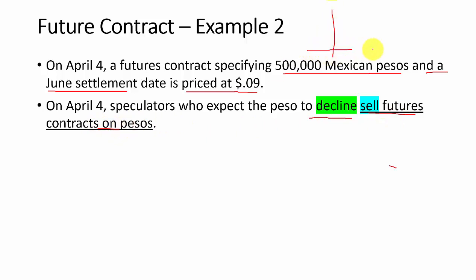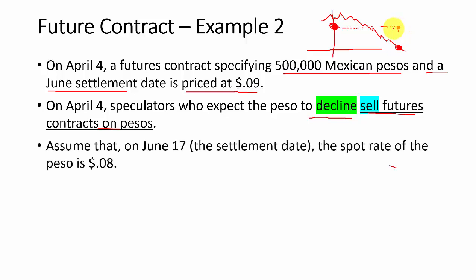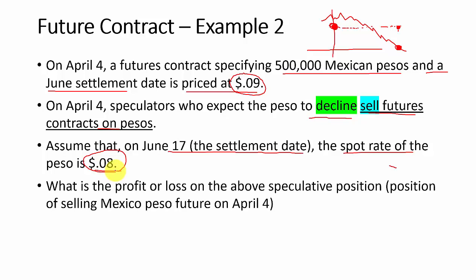On the same day, a speculator who expects the peso will decline decides to sell a futures contract on the peso. If you believe something is going down and the futures price is still at a high level, you sell now. By the expiration date, you can buy that currency at a lower price and deliver it per the futures contract at a better price. Assuming that at the settlement date of June 17 the spot rate of the peso appears to be 8 cents — it depreciated from 9 cents — what is the profit or loss on this speculative position?